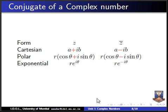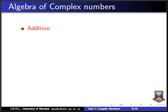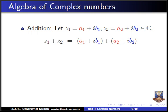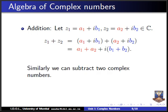Let us go to the algebra of complex numbers. To add two complex numbers z₁ = a₁ + ib₁ and z₂ = a₂ + ib₂, we add real part with real part and imaginary part with imaginary part: z₁ + z₂ = (a₁ + a₂) + i(b₁ + b₂). Subtraction works the same way: z₁ − z₂ = (a₁ − a₂) + i(b₁ − b₂).